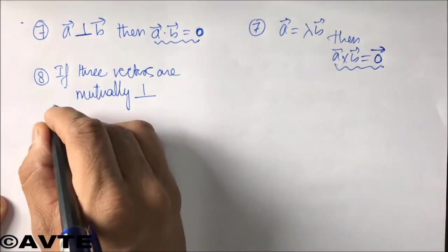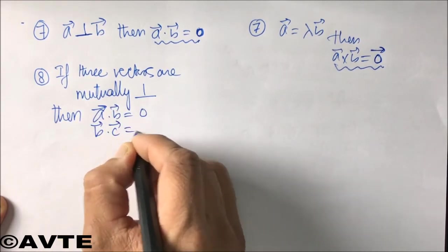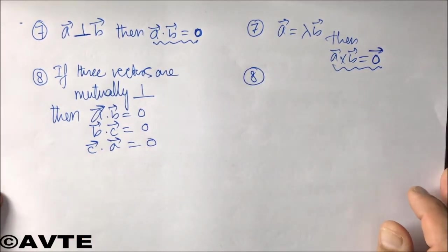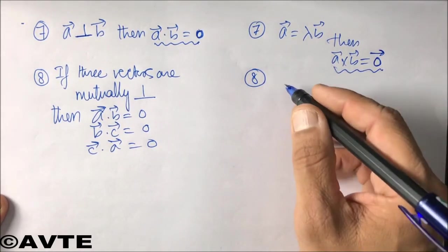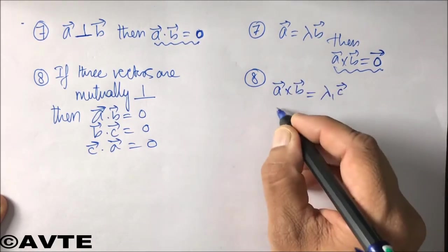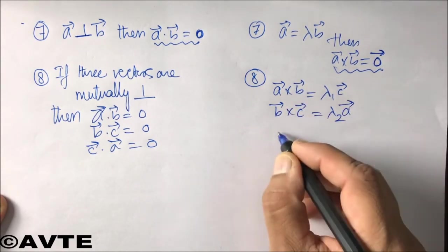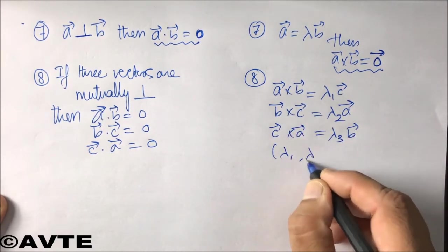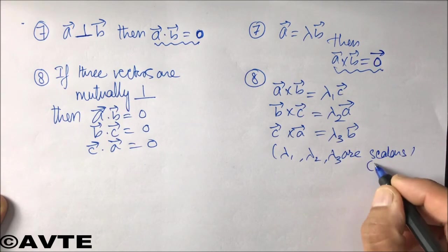Coming to orthogonal vectors - if three vectors are mutually perpendicular, then a dot b will be zero, b dot c will be zero, and c dot a will be zero. Well, this thing will not hold true in case of cross product. So if three vectors are mutually perpendicular or are orthogonal, then the cross product of two will be some constant times the third. Where lambda one, lambda two, lambda three are numbers or scalars, that is constants.